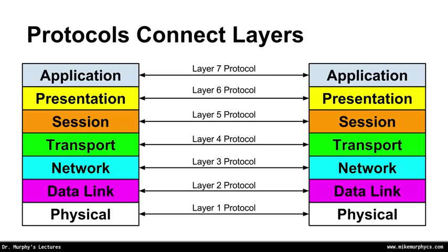A protocol connects a layer on two different devices. So if I have an application layer protocol — a layer 7 protocol — I'm connecting the application layer on one device to the application layer of another device. Of course, in order to do that, I have to descend through the different layers on the first device and ascend up the layers on the other device. I can have protocols at any of the seven layers.